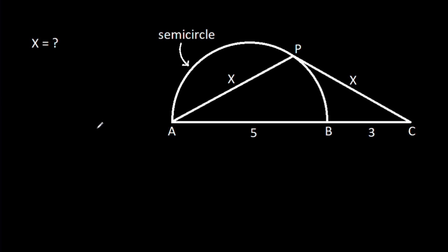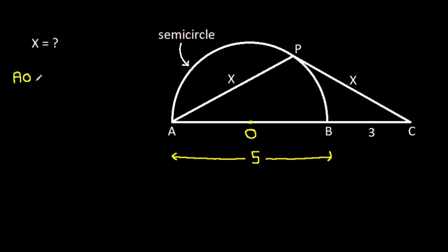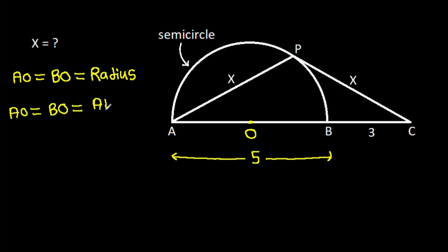So, AB is 5 and suppose the center of the circle is O. Then AO will be equal to BO, that will be the radius, and AO will be equal to AB over 2, and AB is 5, so AO is 5 over 2.